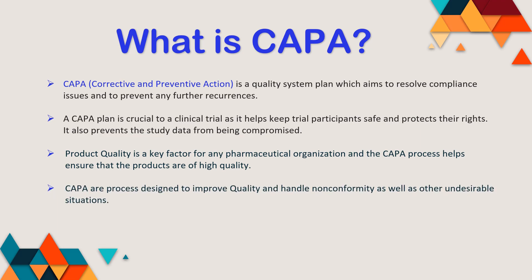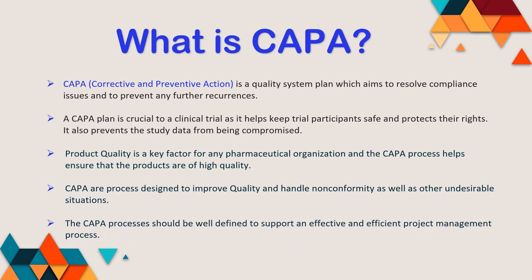This process helps to ensure that products are of higher quality. CAPA is designed to improve quality and to handle any non-conformity as well as any undesirable situation — if a situation arises, how we can protect against or prevent it in the future. This process is well defined to support effective and efficient project management so that issues are tackled at their root and prevented from happening in the future.